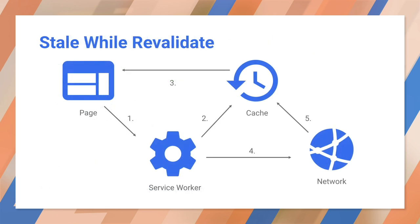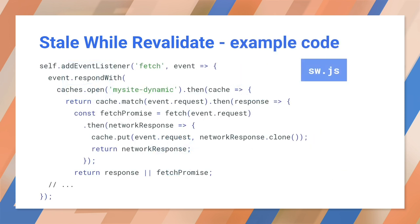The stale-while-revalidate strategy is ideal for frequently updating resources where having the very latest version is non-essential — avatar images, for example. If there's a cached version available, use it, but fetch an update for next time. The code is similar to cache-then-network: return the cached response immediately and update from the network. However, with this strategy, you don't update the page every time data is returned from the network — you only update the cache. The new resource will be available on refresh. This can be used for stuff that doesn't need to be immediately up to date but should be kept relatively fresh, such as third-party libraries or avatars.